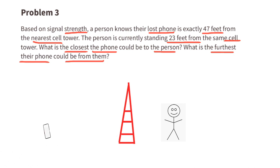What is the furthest their phone could be from them? The phone is 47 feet from the cell tower and the person is 23 feet from the same tower. So the expression 47 plus 23 will tell us the furthest the phone could be from the person. Since 47 plus 23 equals 70, the furthest the phone can be from that person is 70 feet.